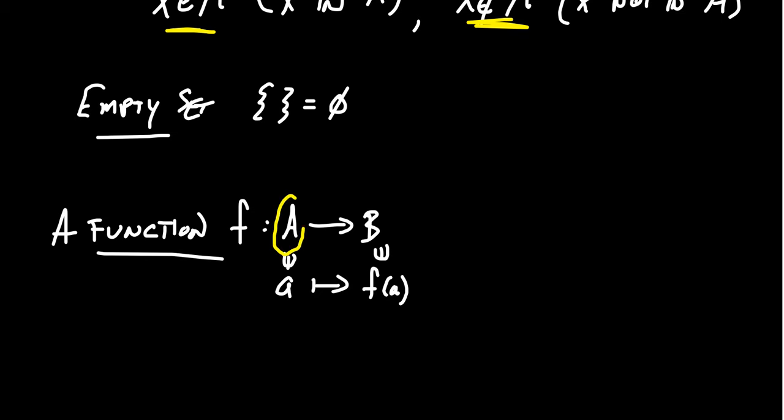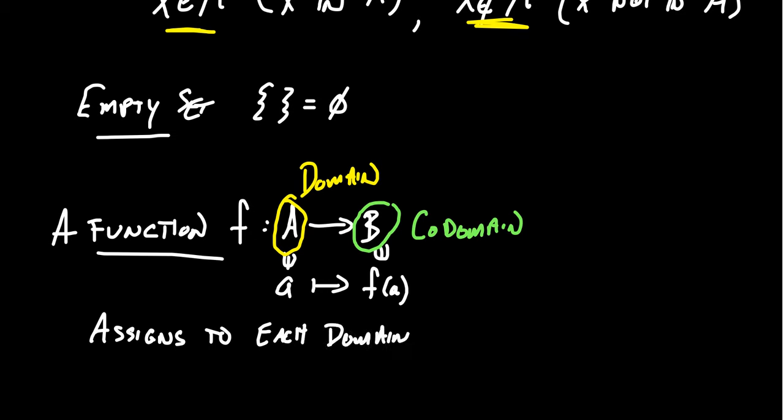There's some rule that assigns to each element in the first set to some element in the second set. Now, a little bit of vocabulary here, this set on the left that we are going to assign values to, this is called the domain of the function. And this second set B is commonly referred to as the co-domain of the function. Co here is just short for complementary. It's the complement of the domain. And so what a function does is it assigns to each domain element a co-domain element. And that's it. Now, be aware that not everything in the co-domain necessarily gets someone assigned to it, assigned to it, right?